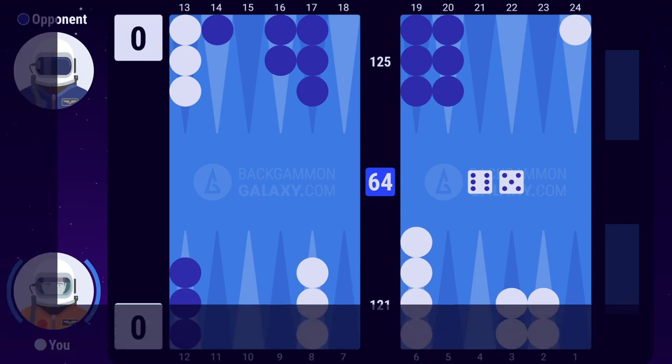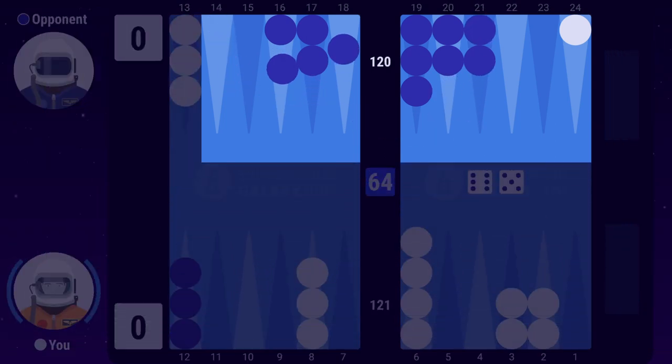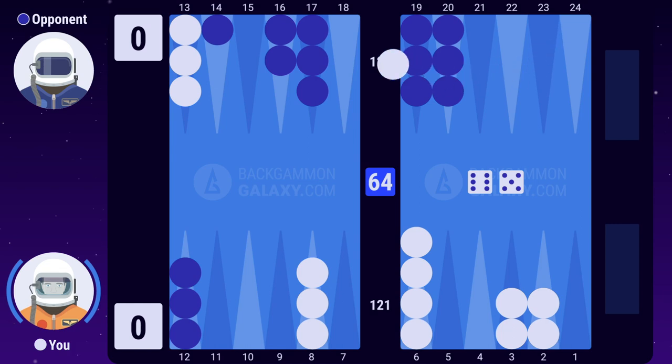Since you're ahead in the race, you want to avoid getting trapped behind your opponent's prime. Playing 24 to 13 makes for a racing game, which is exactly what you want when you're leading 15 pips.